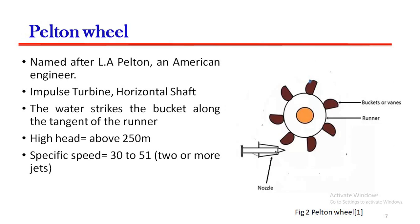Next comes the Pelton wheel. The Pelton wheel has been named after an American engineer L.A. Pelton. It is an impulse turbine having a horizontal shaft. On the right hand side, you can see the diagram of a Pelton wheel. The water strikes the bucket along the tangent of the runner. This turbine is suited for high heads above 250 meters, and the specific speed is 30 to 51 for two or more jets.